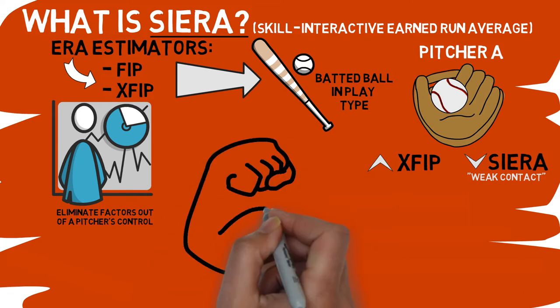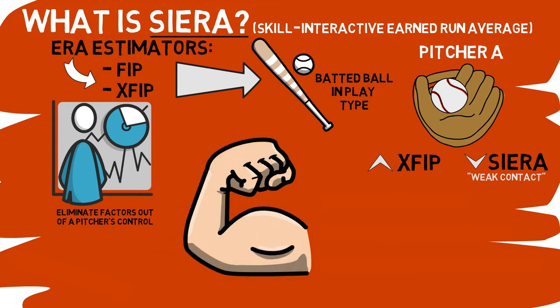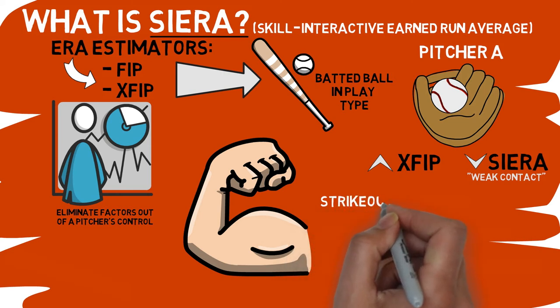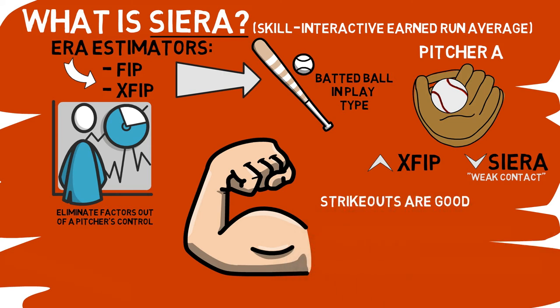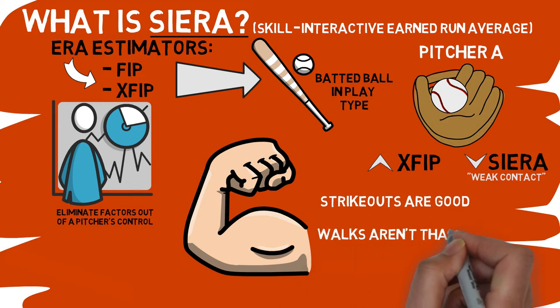There are three main things that Sierra does better than almost any other stat out there. The first being: strikeouts are really good — one, because there is no chance for a hitter to get on, of course, but secondly, because higher strikeout pitchers generate weaker contact and have lower home run rates. It also tells us that walks don't hurt a pitcher who doesn't often walk batters as much as it does to someone who walks a lot of batters, because they limit further base runners after that.